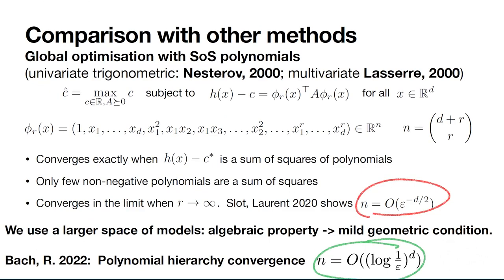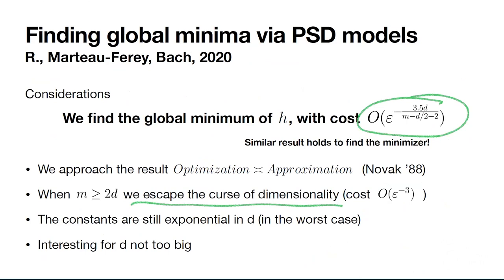For polynomials, prior SOS algorithms had a rate of epsilon to the minus d over two; we showed that under suitable conditions one can achieve the analytic rate — logarithm(1/epsilon) to the d. The curse of dimensionality appears only in the constant (the d in the exponent of the logarithm), not as a polynomial rate. This mirrors what we obtain for C-infinity functions generally.